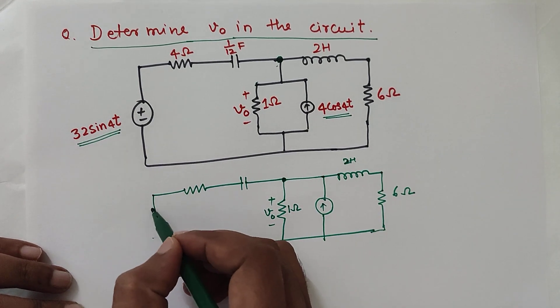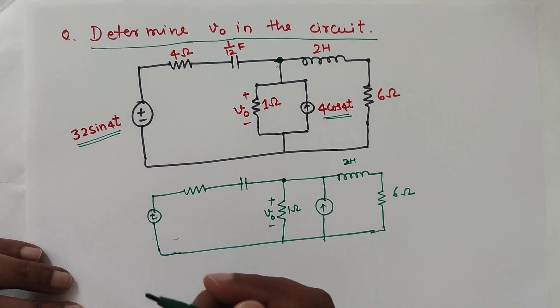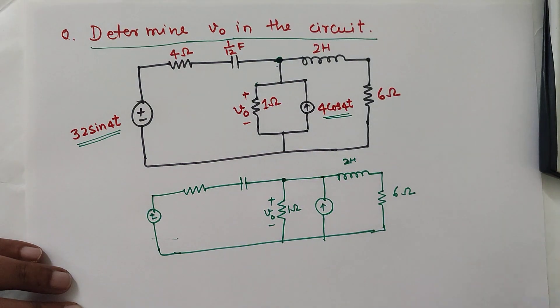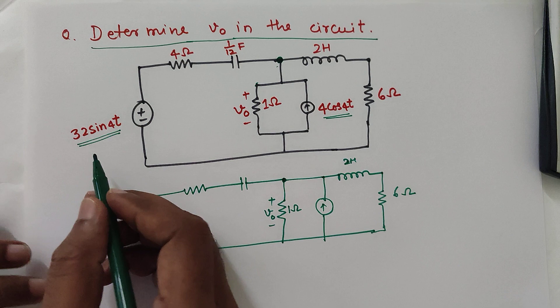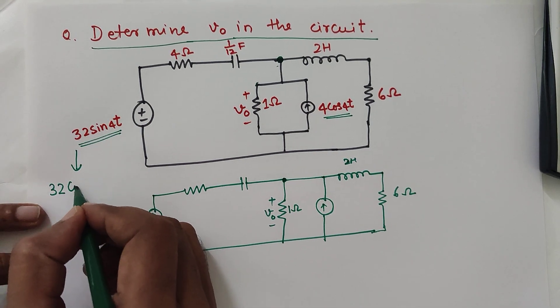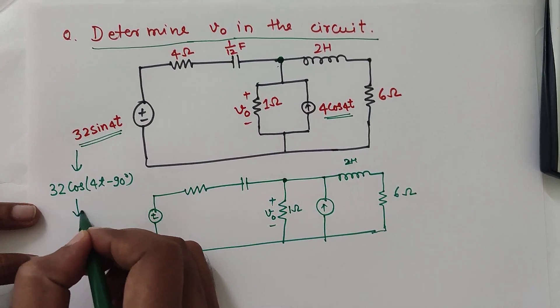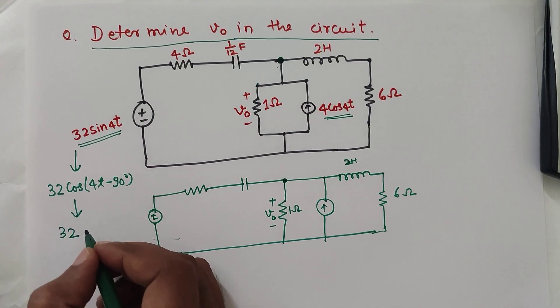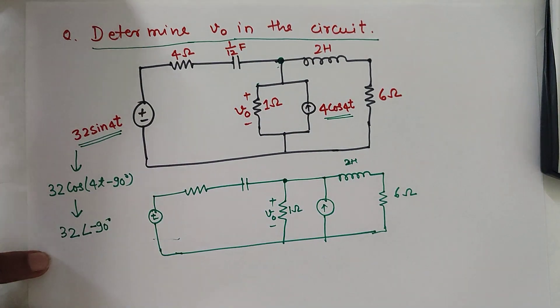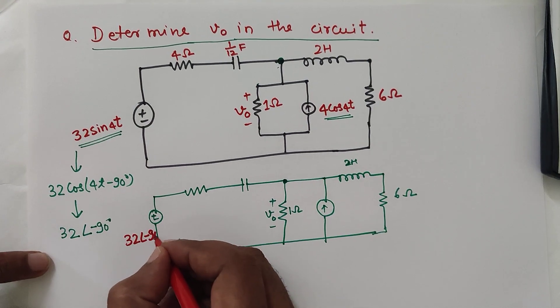Let us calculate the values of voltage source and current source in the phasor form. This is voltage source. When you calculate this in phasor form, since it is 32 sin 40t, sin can be converted into cos as 32 cos(40t minus 90 degrees). So we can write that here as the source 32 angle minus 90 degrees.